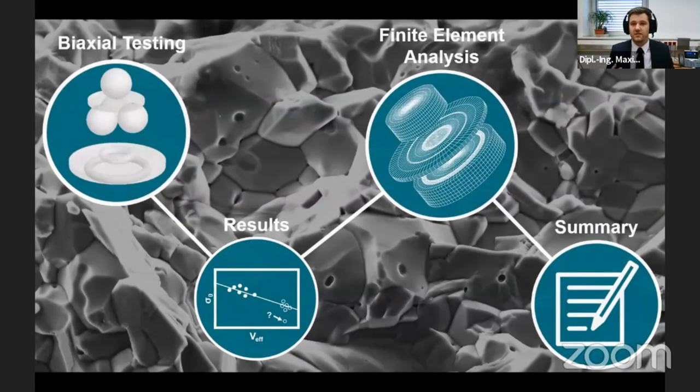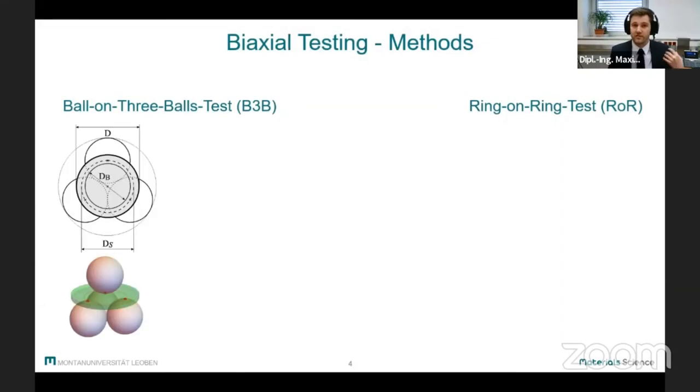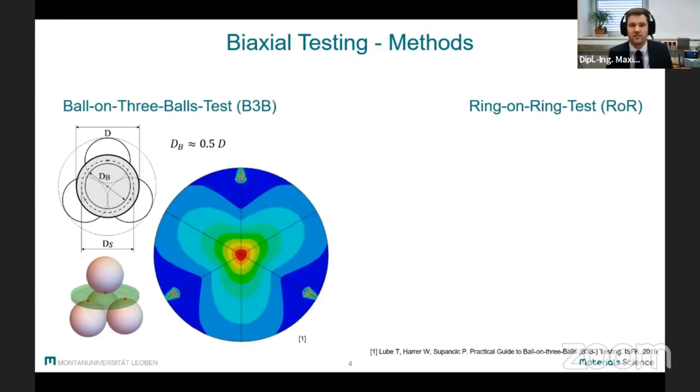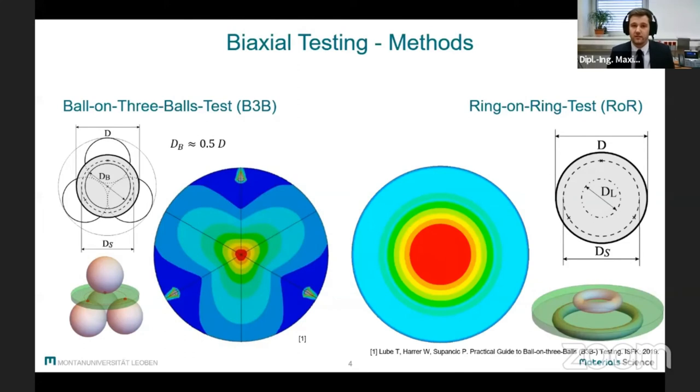So in order to answer these questions, let's start with the testing methods. As the name already implies, the Ball-on-Three-Balls test uses three supporting balls and a single loading pole and applies a biaxial stress field with a typical three-fold symmetry in the specimen. In comparison, the Ring-on-Ring test utilizes two coaxial rings and applies a fully rotational symmetric stress field. You can see there's a large difference in the size of the maximum stress region between the two methods, which will have quite a big influence on the measured strength.